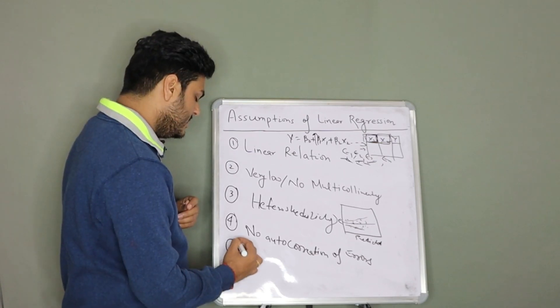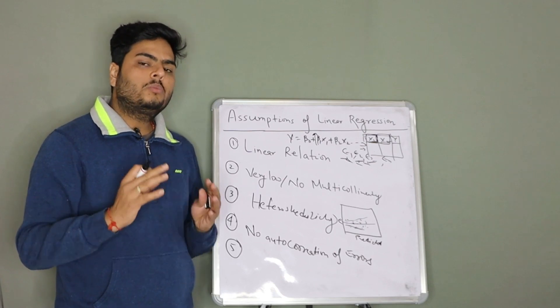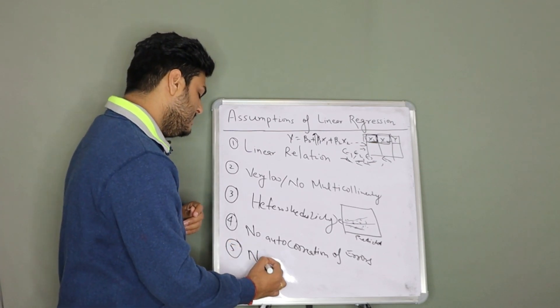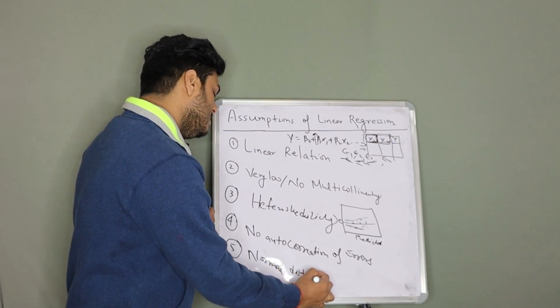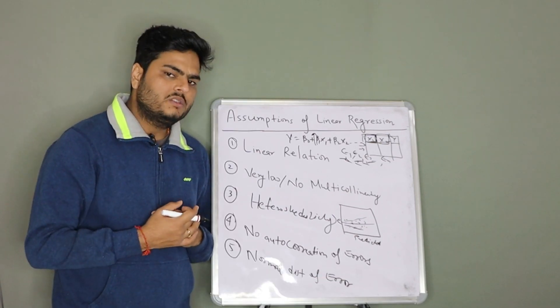Fifth one, you can take for the error that your errors should be normally distributed. Normal distribution of errors, fifth one, normal distribution of errors. This is the five main assumptions of linear regression.